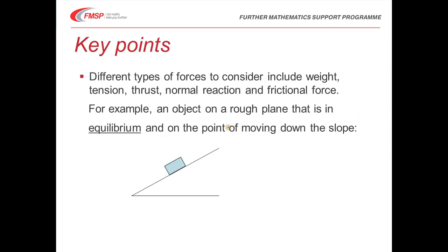The sorts of forces we might get asked to consider include weight, tension in a string, the thrust in a rod between two objects, the normal reaction between an object and a surface, and perhaps a frictional force. For example, if we had an object on a rough plane — rough indicating there's friction — and it's in equilibrium and on the point of moving down the slope, we could draw a diagram showing the forces. The first force I always draw is the normal reaction.